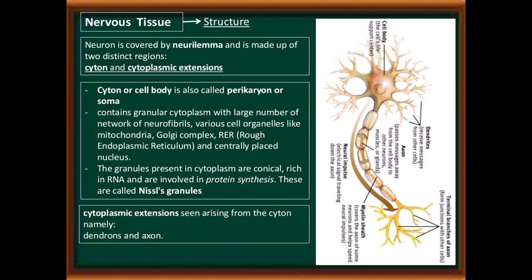The cytone or cell body is also called perikaryon or soma. It contains granular cytoplasm with a large number of neurofibrils and various cell organelles like mitochondria, Golgi complex, rough endoplasmic reticulum, and a centrally placed nucleus.